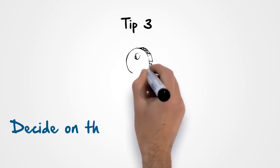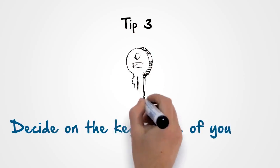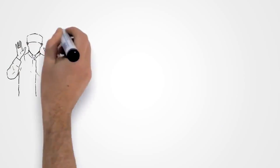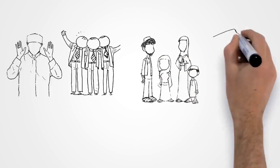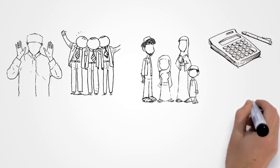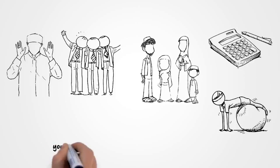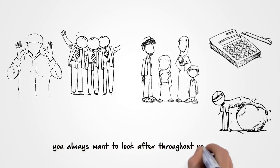Tip three: Decide on the key areas of your life. These areas can include ibadah, family, friends, finance, health, recreation, and any other slice that you always want to look after throughout your life.